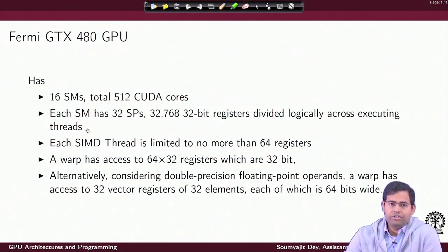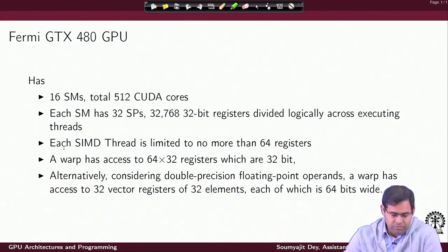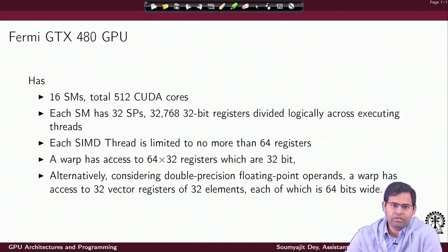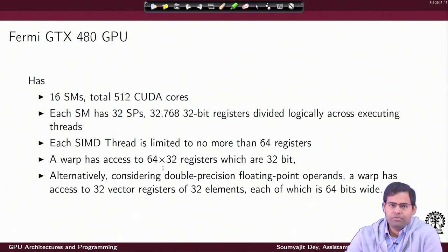Each SM comprises 32 SPs and those many 32-bit registers. If I look at the system from the perspective of a single SIMD thread, it is limited to no more than 64 registers. A warp has access to 64 times 32 registers — since inside a warp I have 32 such threads and each thread has access to 64 registers, when a warp is executing inside a GPU it has access to this overall number of registers, each of which are 32 bits.